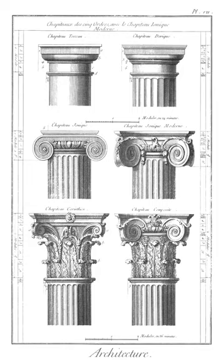Mutule: rectangular block under the soffit of the cornice of the Greek Doric temple, which is studded with guttae. It is supposed to represent the piece of timber through which the wooden pegs were driven in order to hold the rafter in position, and it follows the sloping rake of the roof. In the Roman Doric order the mutule was horizontal, with sometimes a crowning fillet, so that it virtually fulfilled the purpose of the modillion in the Corinthian cornice.